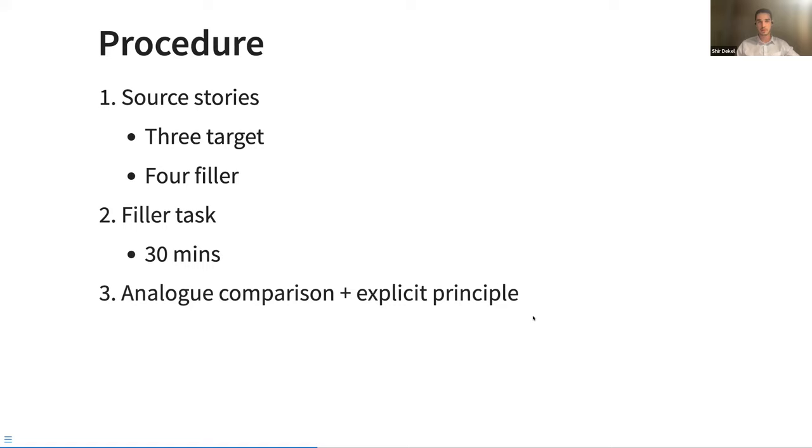And then the key part, and this is where the between-subject allocation came in, they made a comparison between two symbolic representations of letter strings and symbols, plus were given an explicit principle as well to encapsulate what, to encapsulate that comparison. They were then asked to retrieve one of the stories that they had before: which story does this best remind you of, does this most remind you of? I'll just pause there for a moment and see if anyone has any clarifications about the procedure before I move on to the actual materials and some examples of what participants saw.